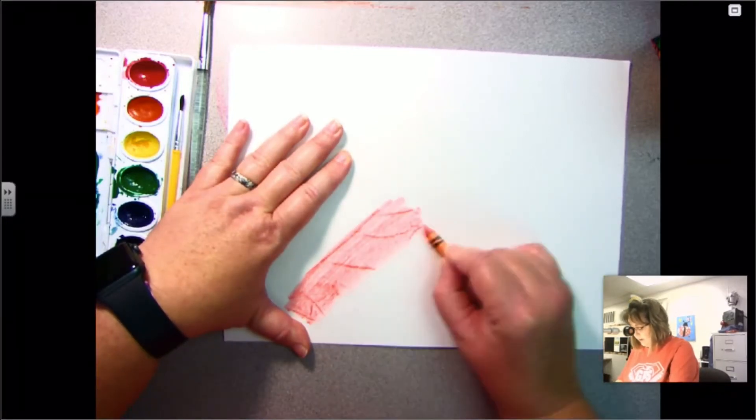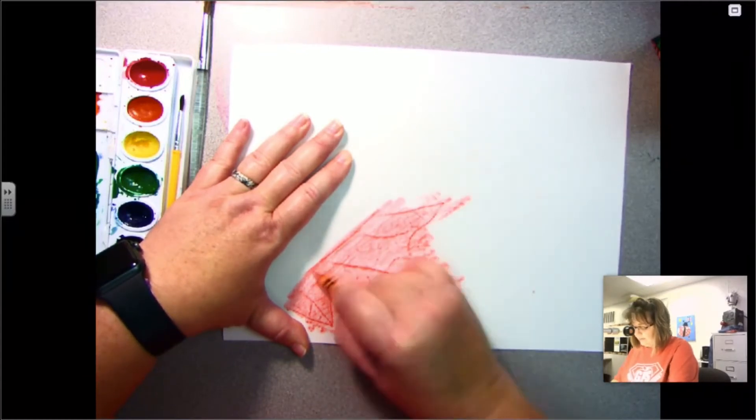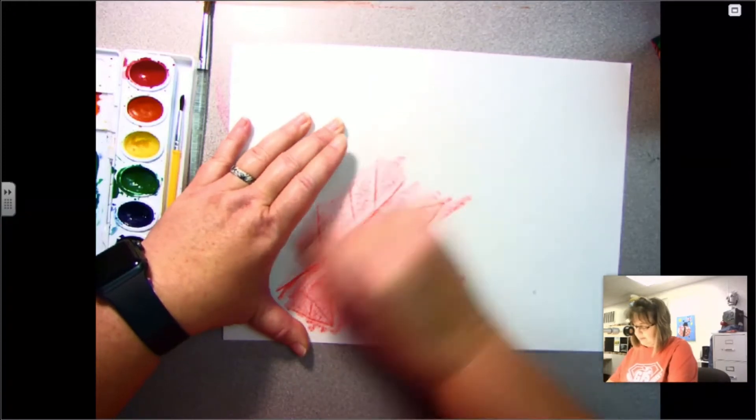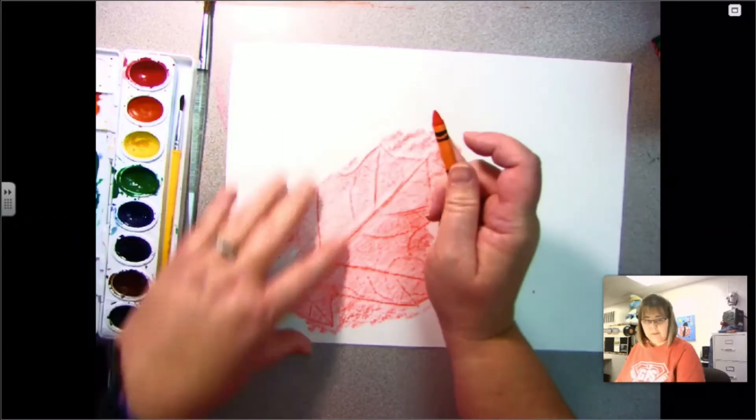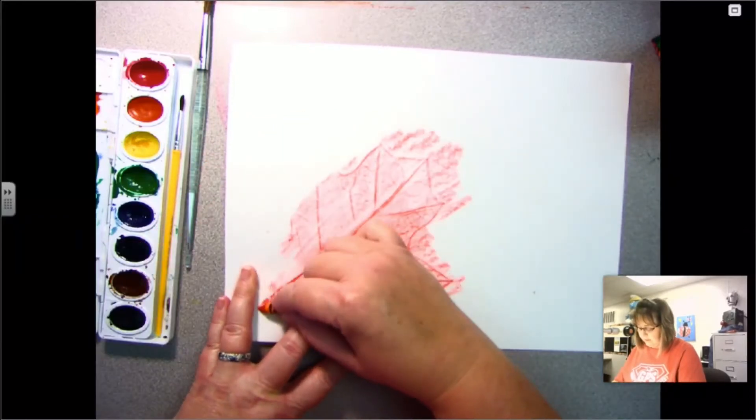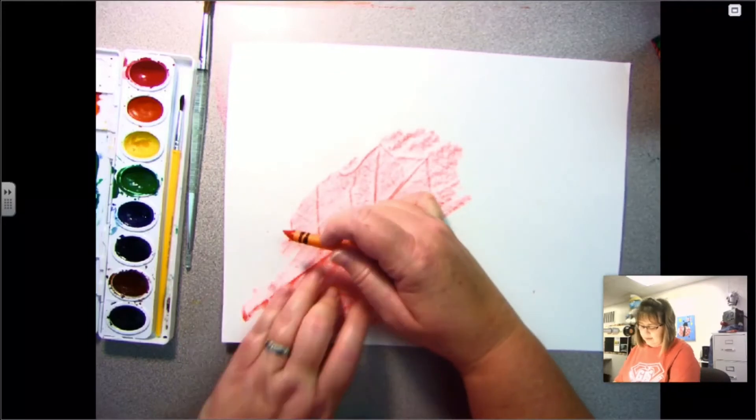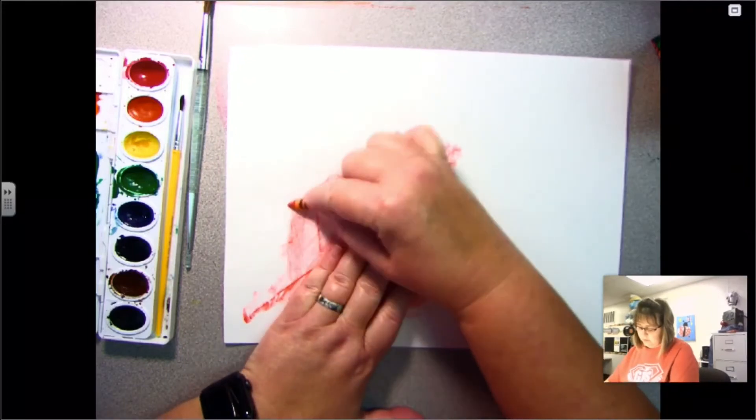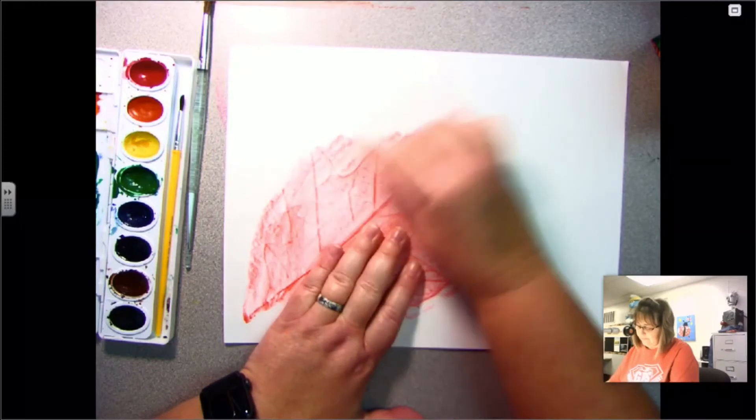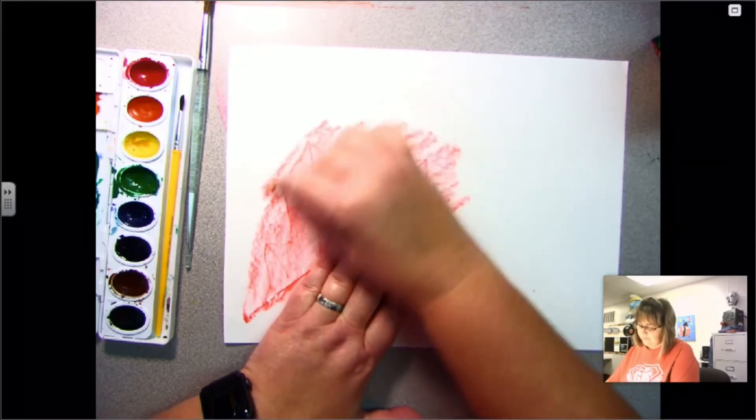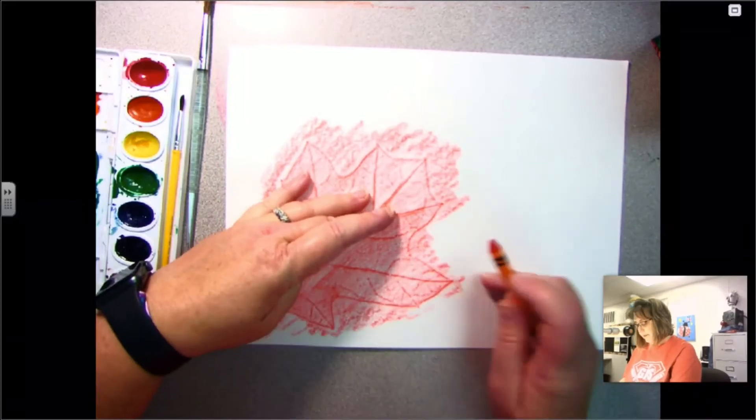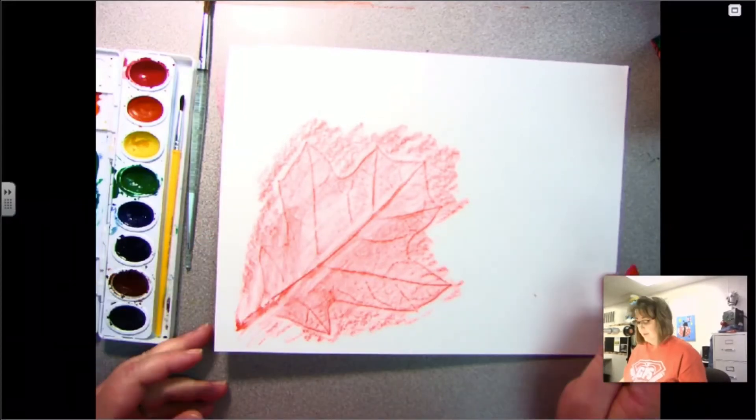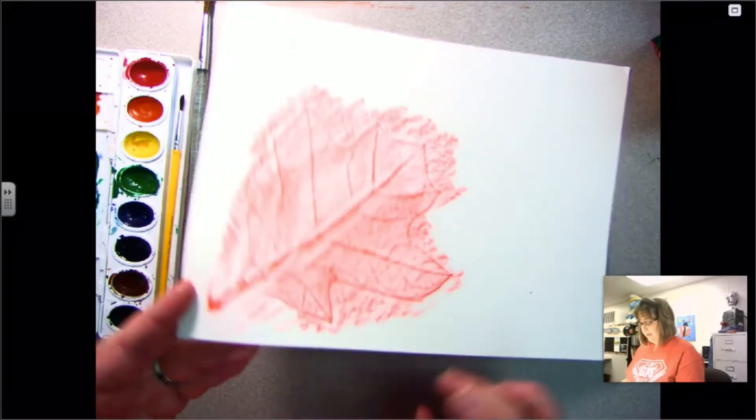You can see that as I rub it, you can see the shape of the leaf show up. I'm being very careful to hold it still. My leaf is kind of big, so I've got to hold it still so it doesn't move under there. There we go, I have my first leaf.